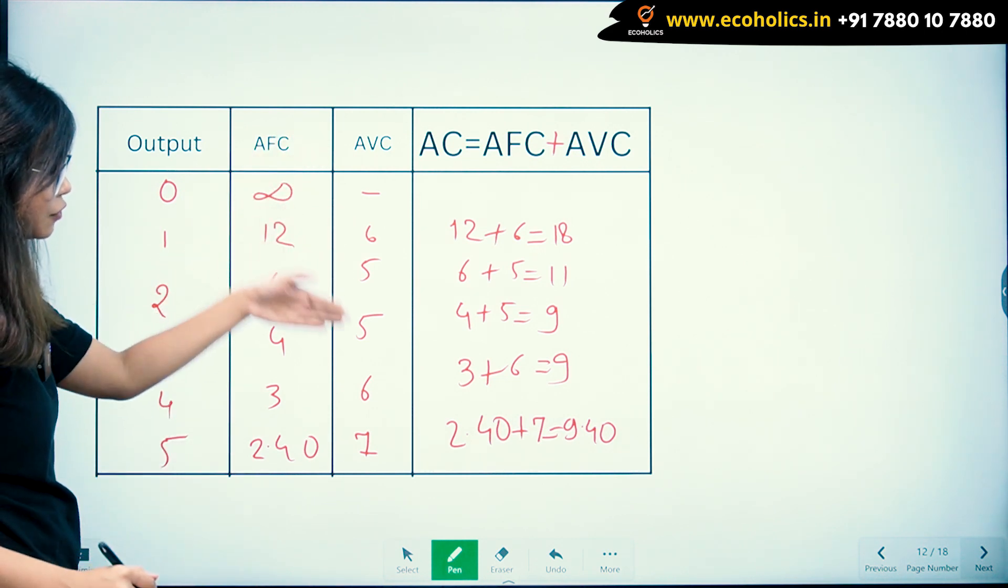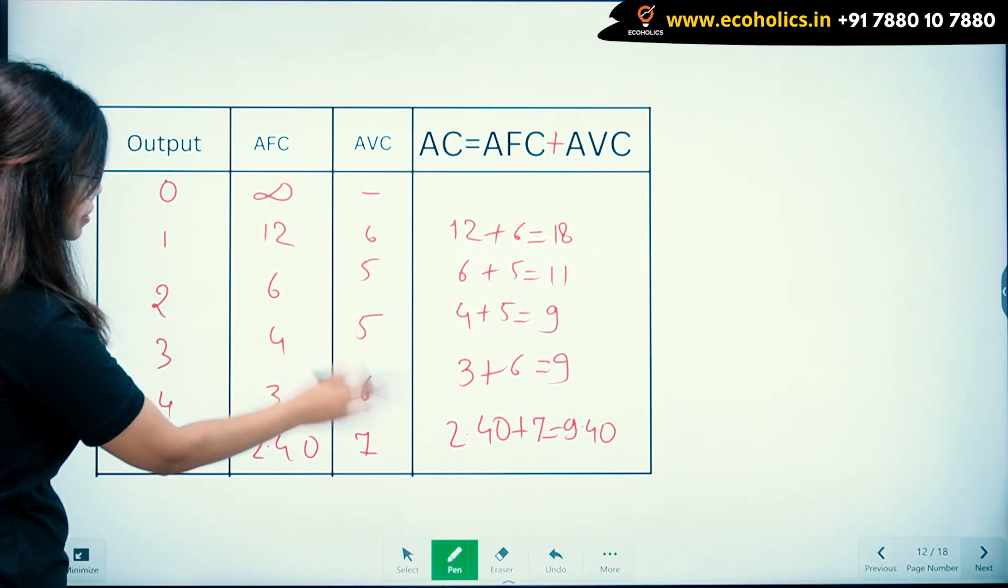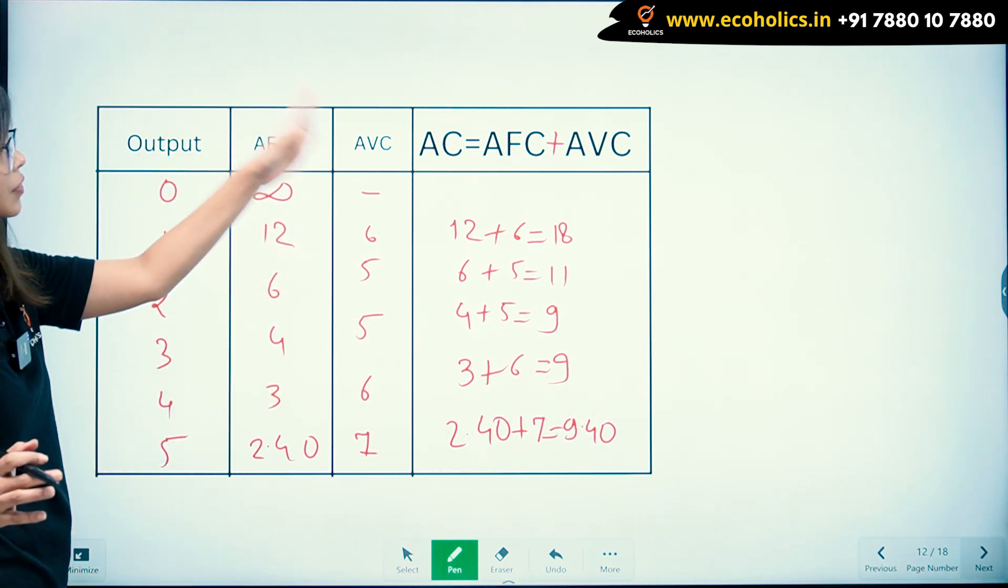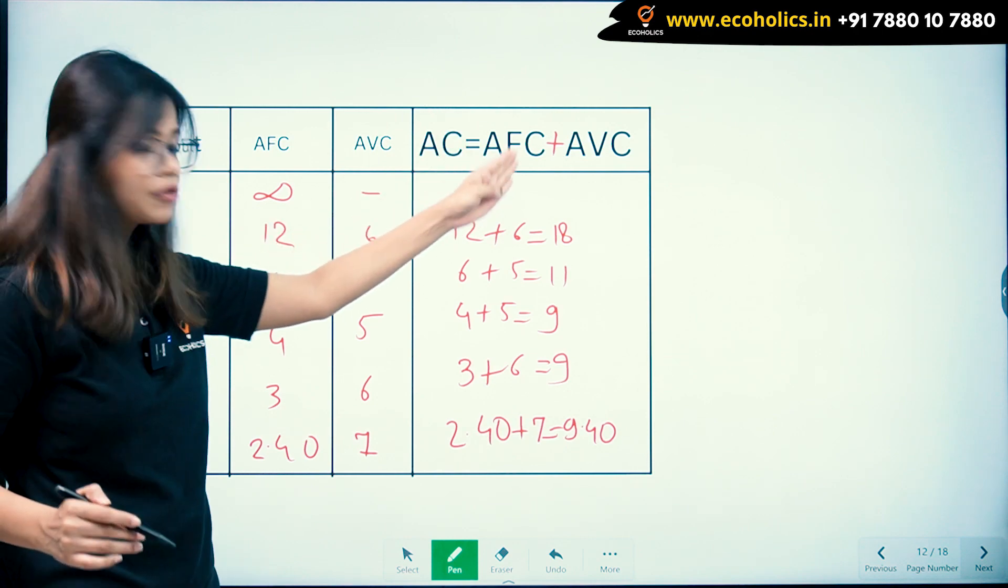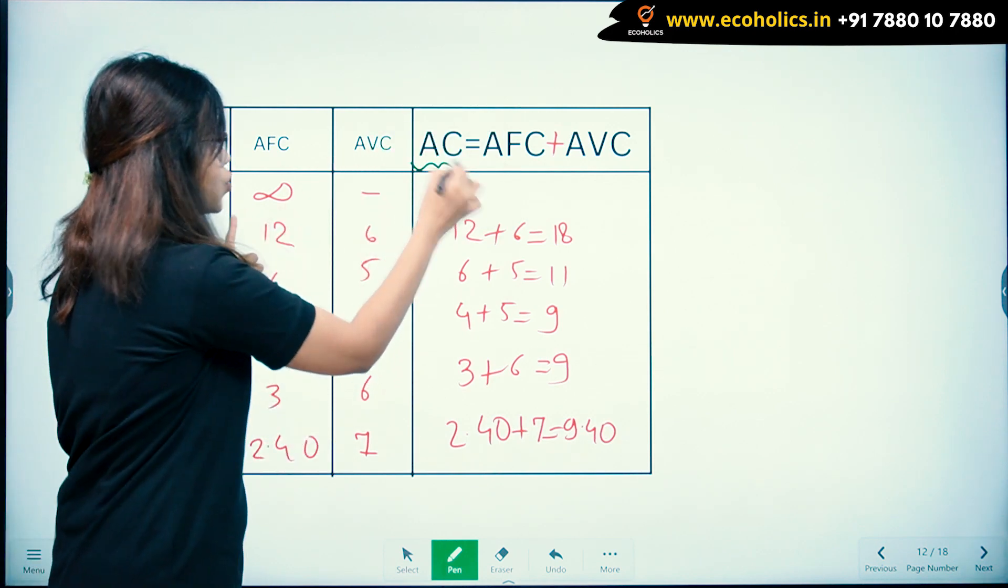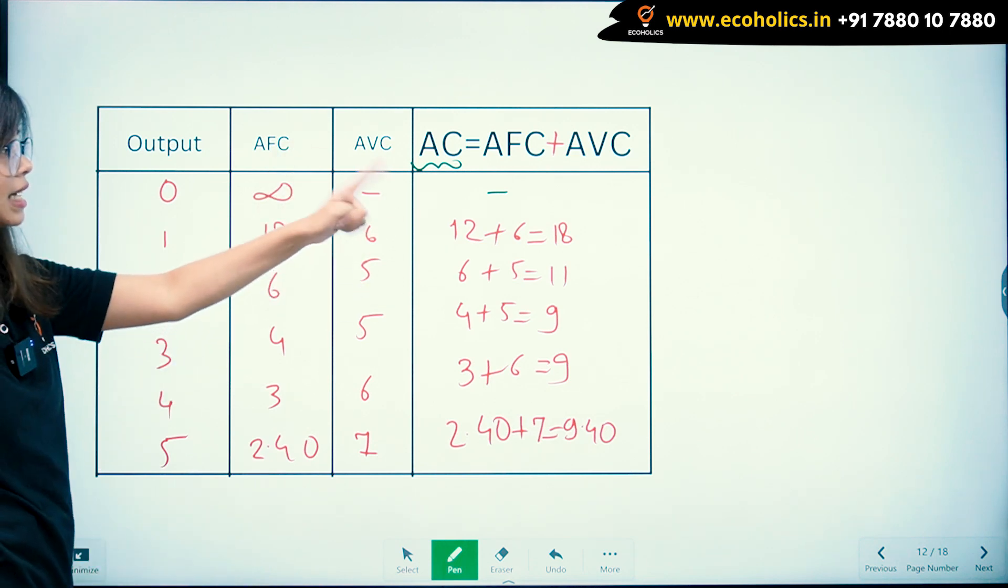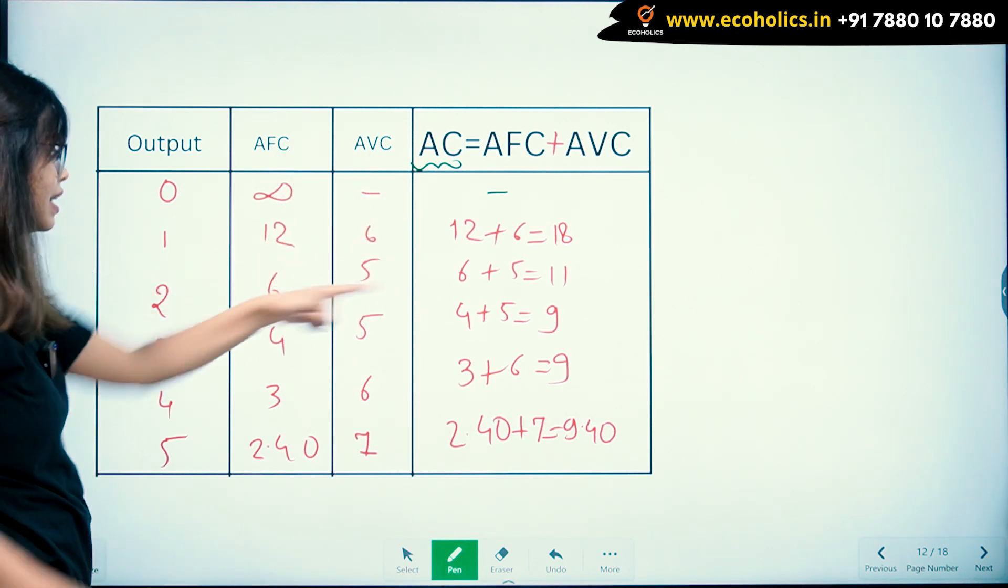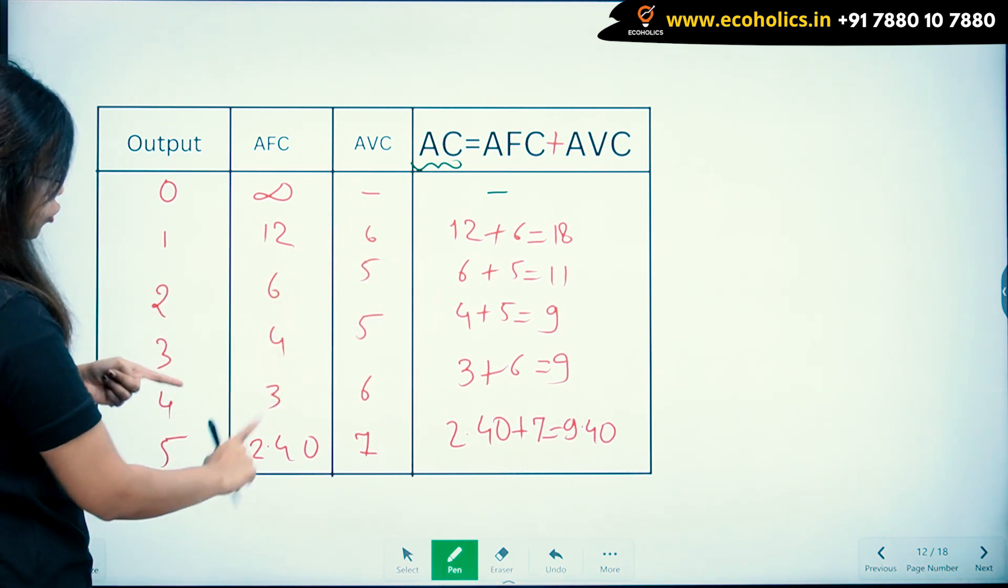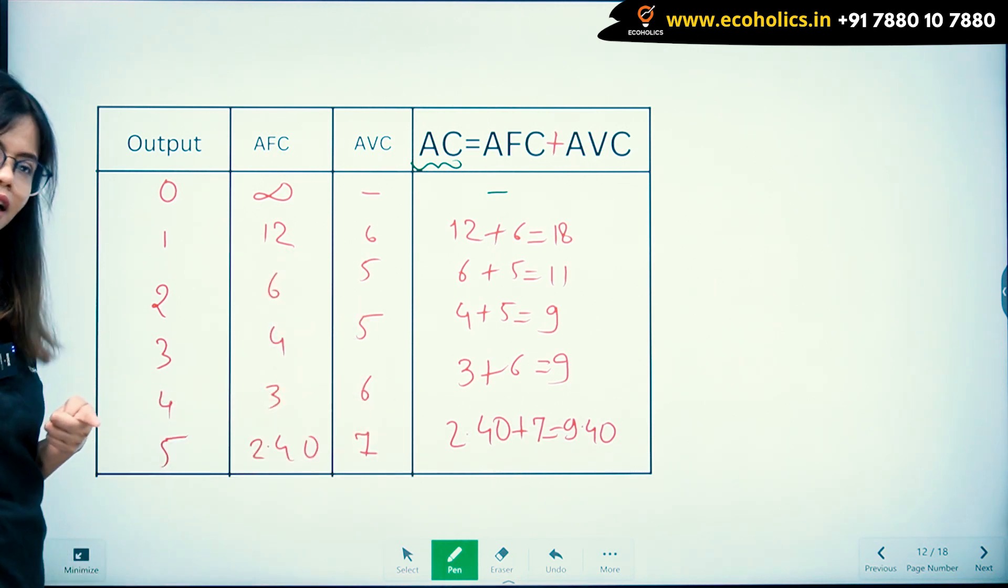We had calculated AFC earlier - it was 12, 6, 4, 3, 2.40. AVC was 6, 5, 5, 6, 7 - initially decreasing, reaches a minimum, then starts to increase. So we have AFC and AVC, we can add these two and get AC. Here: 12 plus 6 gives 18, 6 plus 5 gives 11, 4 plus 5 gives 9, 3 plus 6 gives 9, 2.40 plus 7 gives 9.40.